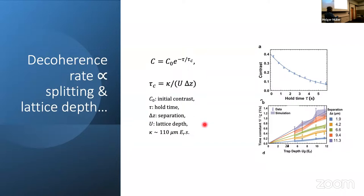The proportionality constant kappa is about 110 in weird units, microns, recoil energies, seconds. If we have 110 micron splitting, the lattice has one recoil depth and then we get one second of coherence decay time. Typically, we run the experiment with just a few micron separation. So what that shows you is you can either have a large separation and a short hold time or a small separation and a long hold time. But where does this come from? It was really a big mystery.